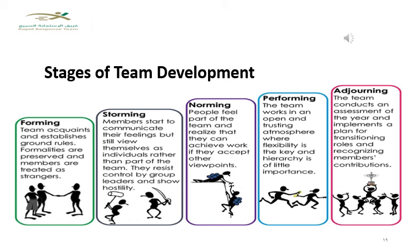The first stage is forming — the initial stage in the process of putting the structure of the team together. After that comes storming, where the process of organizing tasks and processes begins. Interpersonal conflicts may happen and hostility may appear. Later, the team moves toward norming.